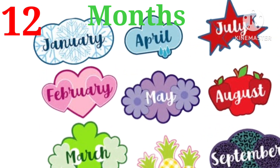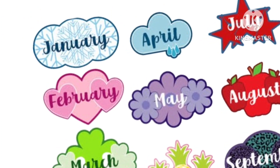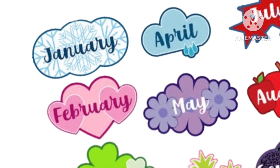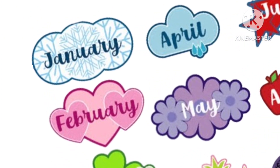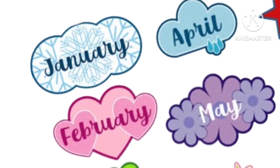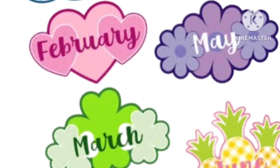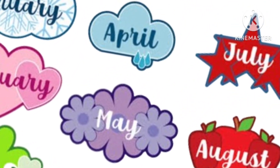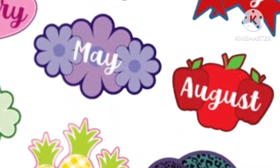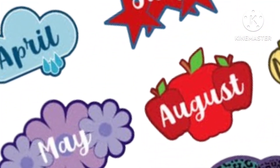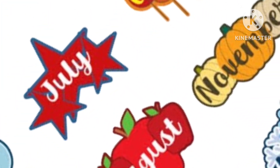months of the year: January, February, March and April, May, June, July and August, September, October, November and December.